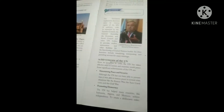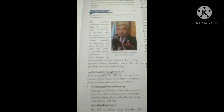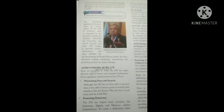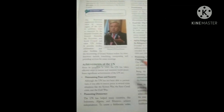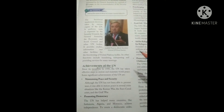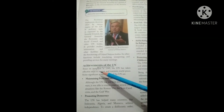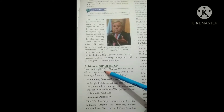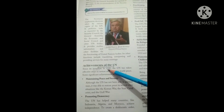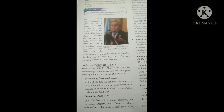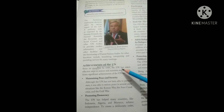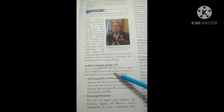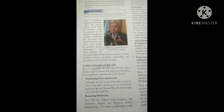These are the main organs of the United Nations. The last topic remaining is the achievements of the UN — what the UN has done for our world. Since its inception in 1945, the UN has taken effective steps to restore and maintain world peace, which is its primary objective.